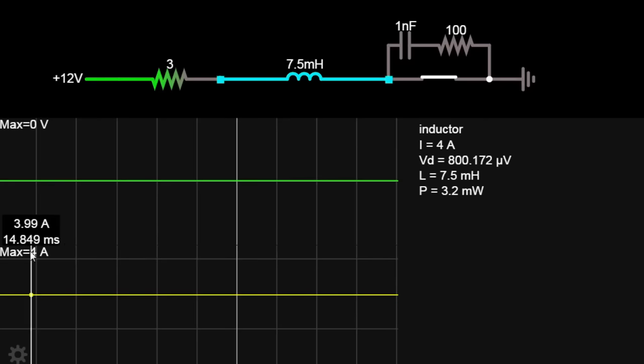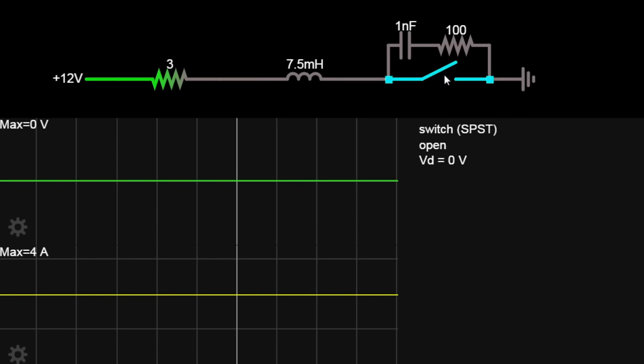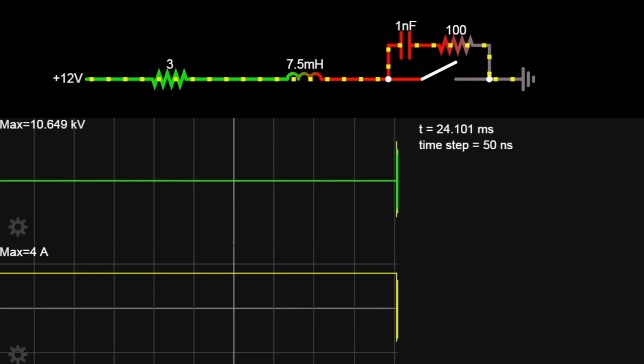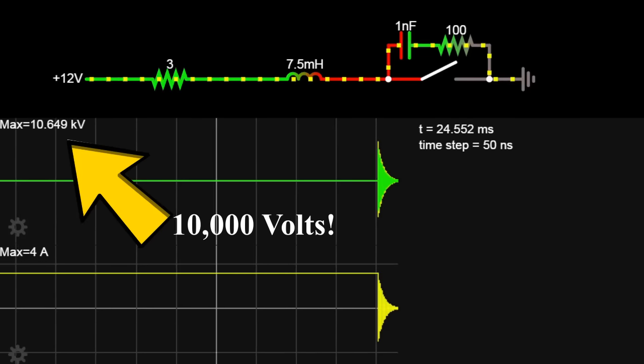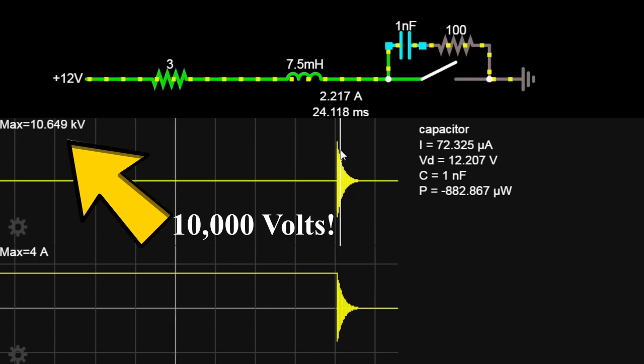Watch what happens to the voltage on the top graph when I resume the simulation. The inductive spike peaks at over 10,000 volts. Remember, we only had 12 volts coming in.